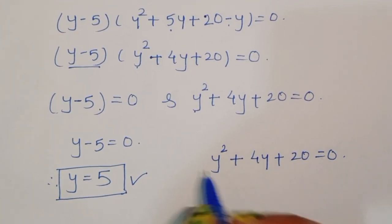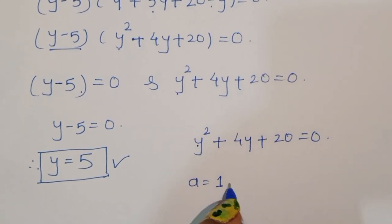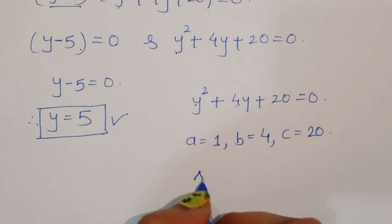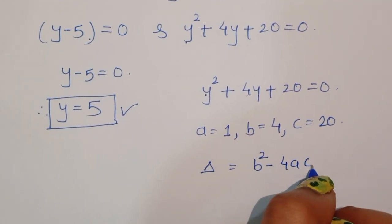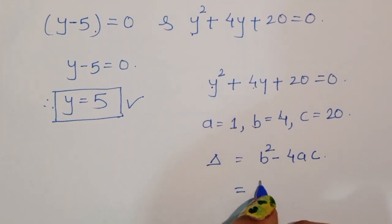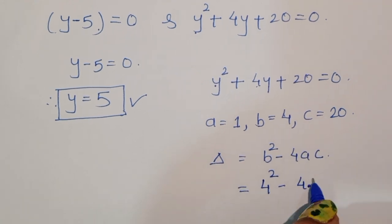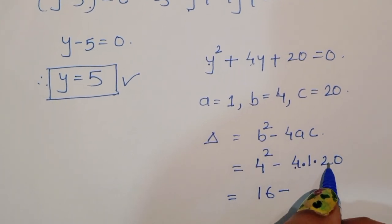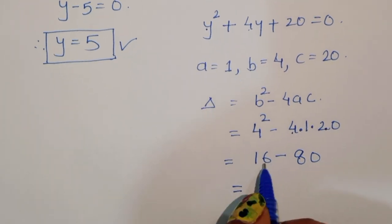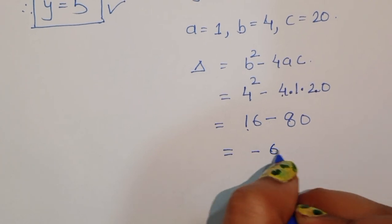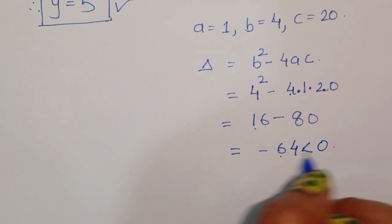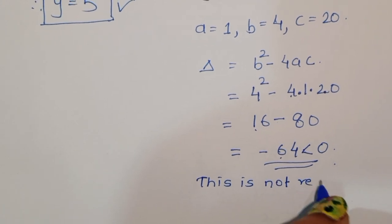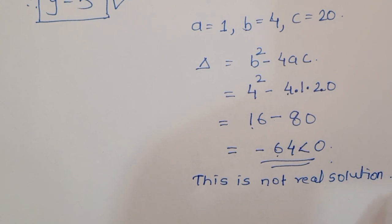Here a equals 1, b equals 4, and c equals 20. We calculate the discriminant: b squared minus 4ac equals 4 squared minus 4 times 1 times 20, which is 16 minus 80 equals minus 64. Since this value is less than 0, there is no real solution from this factor, so we reject it.